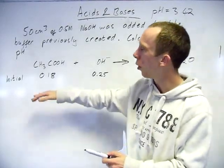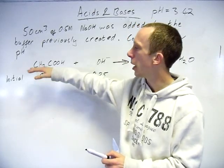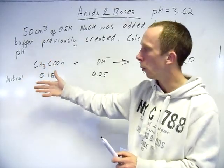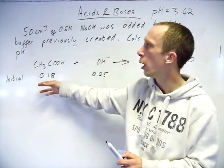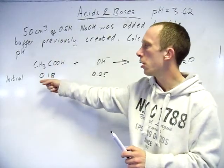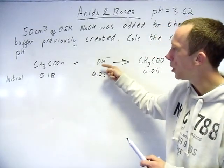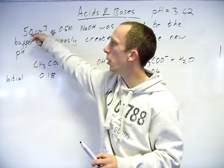Right, so we need to know the initial moles of ethanoic acid. So again, that ties in with what was left over previously when we made that buffer. Let's remember, we started with 0.22, but some of it was neutralized, so we were left with 0.18. Now, the amount of hydroxide ion which is going in, we will use this new information.